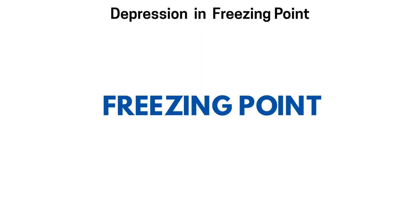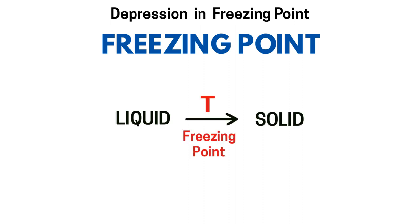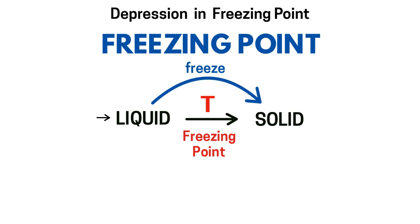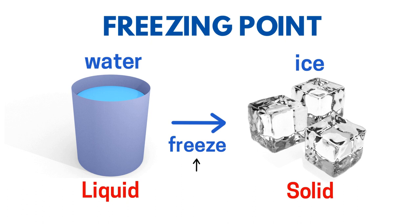सबसे पहले हमें यह समझना होगा कि freezing point क्या होता है। यह वो temperature है जिस पे liquid solid form में change होता है। हम liquid को freeze करते हैं और liquid freeze होके solid form में change हो जाता है। So the temperature at which liquid converts into solid is called freezing point। हमारे पास water है और जब हम इस water को freeze करते हैं तो हमें ice मिलता है। Water ice form में 0 degree Celsius पे freeze होना शुरू होता है — यानि कि 0 degree Celsius है हमारा freezing point।